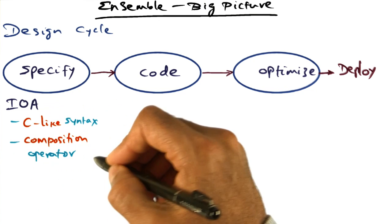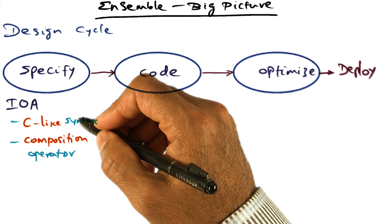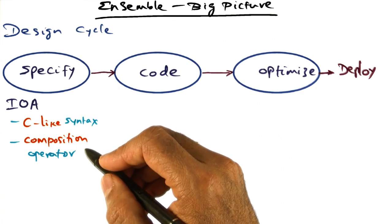And more importantly, the composition operator that's available in IO Automata allows expressing specification of an entire subsystem that we want to build. Example,